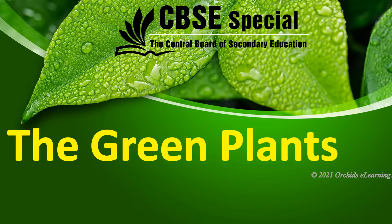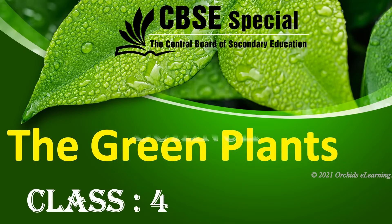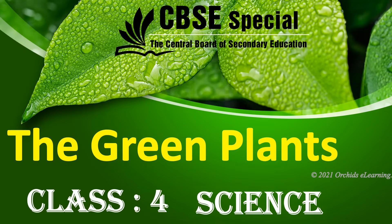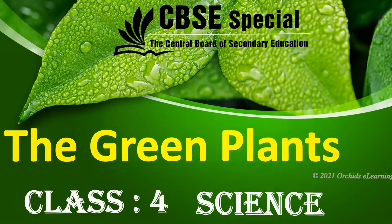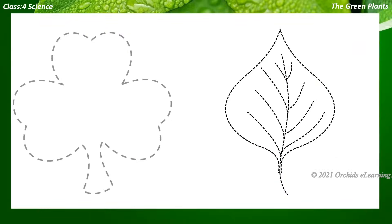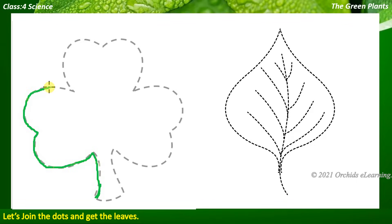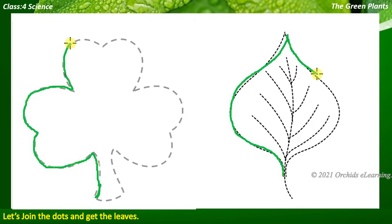The green plants - Class 4 Science. Before starting today's lesson, let us do an activity. Let's join the dots and get the leaves. Well, it turned out good.